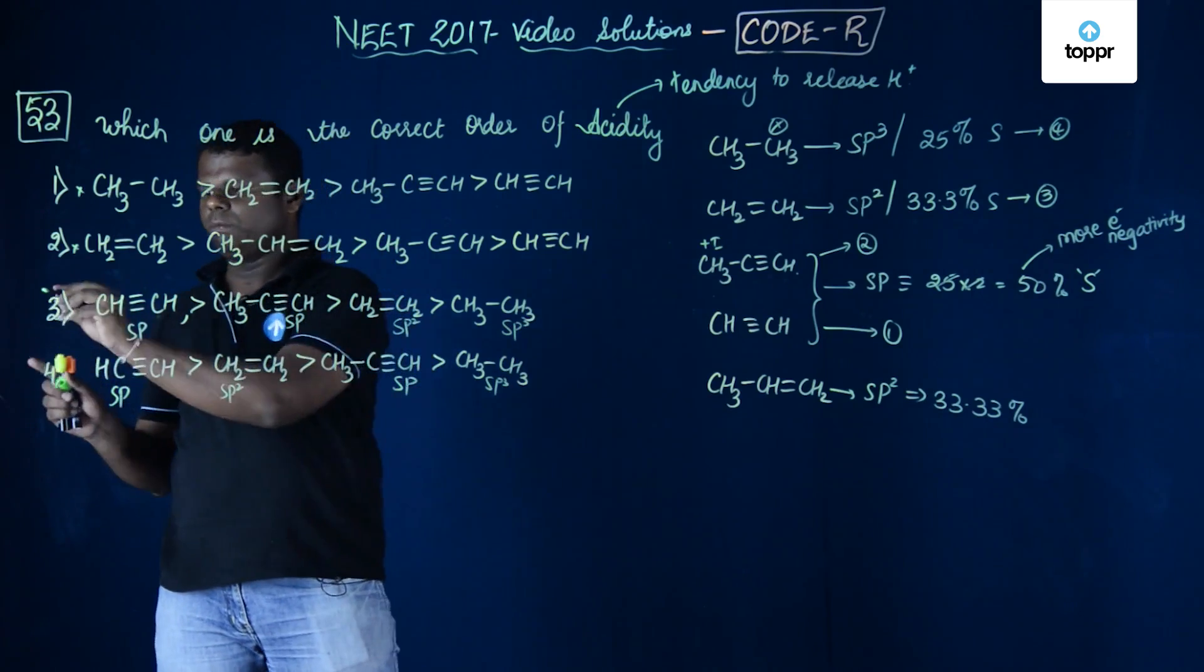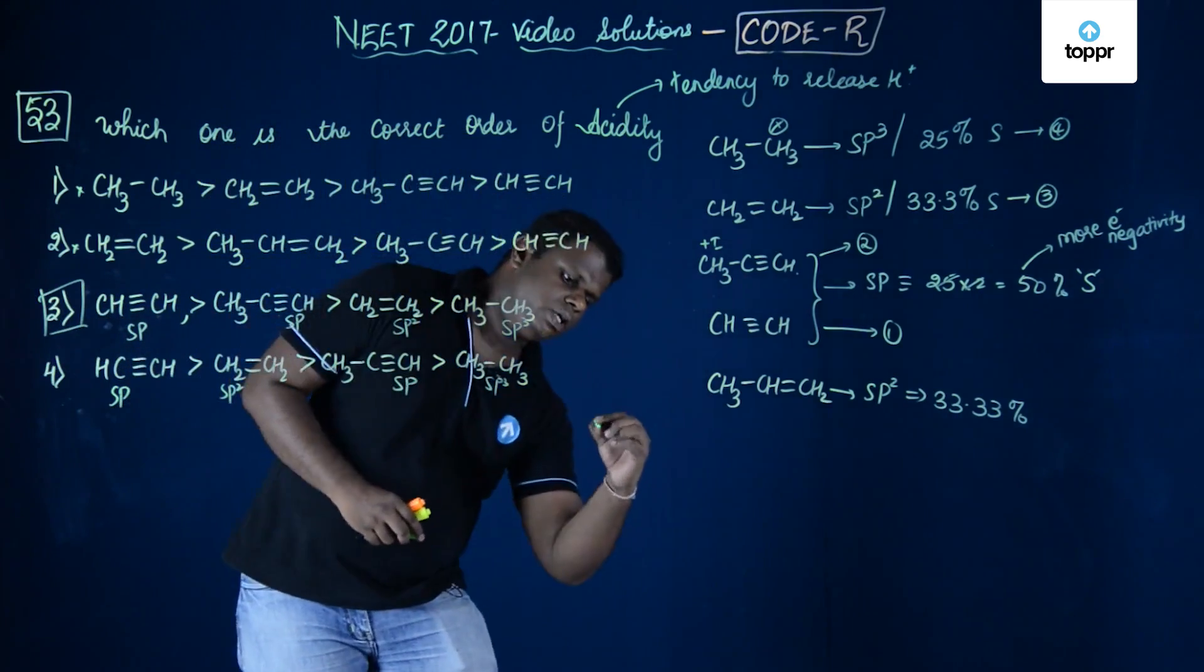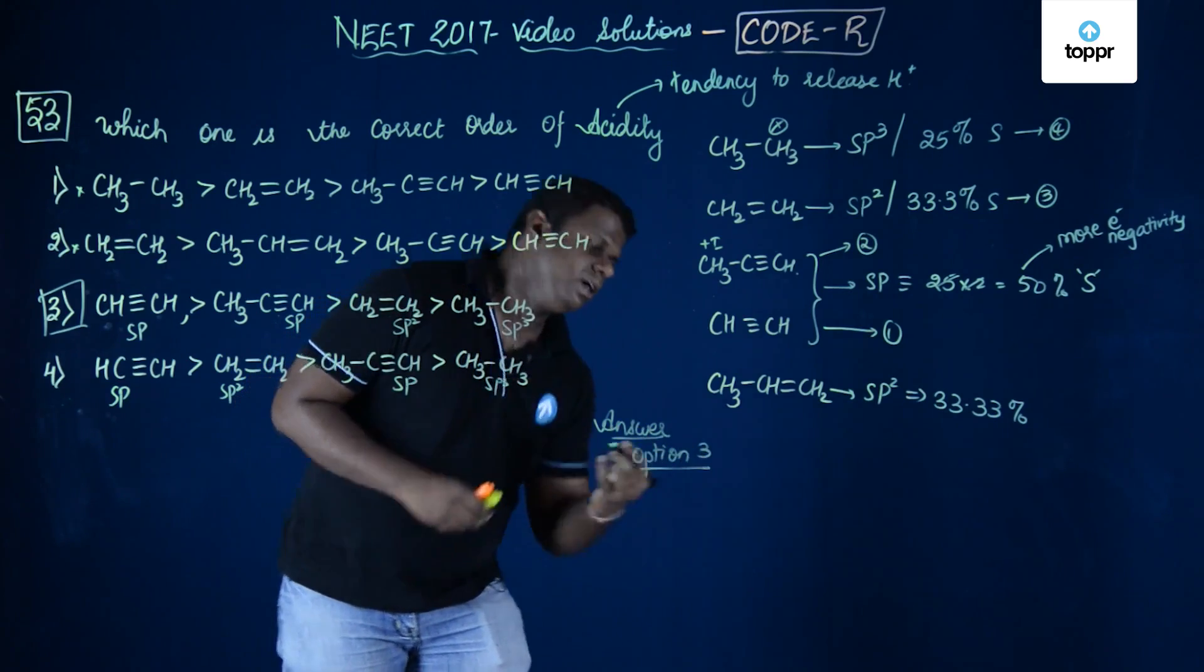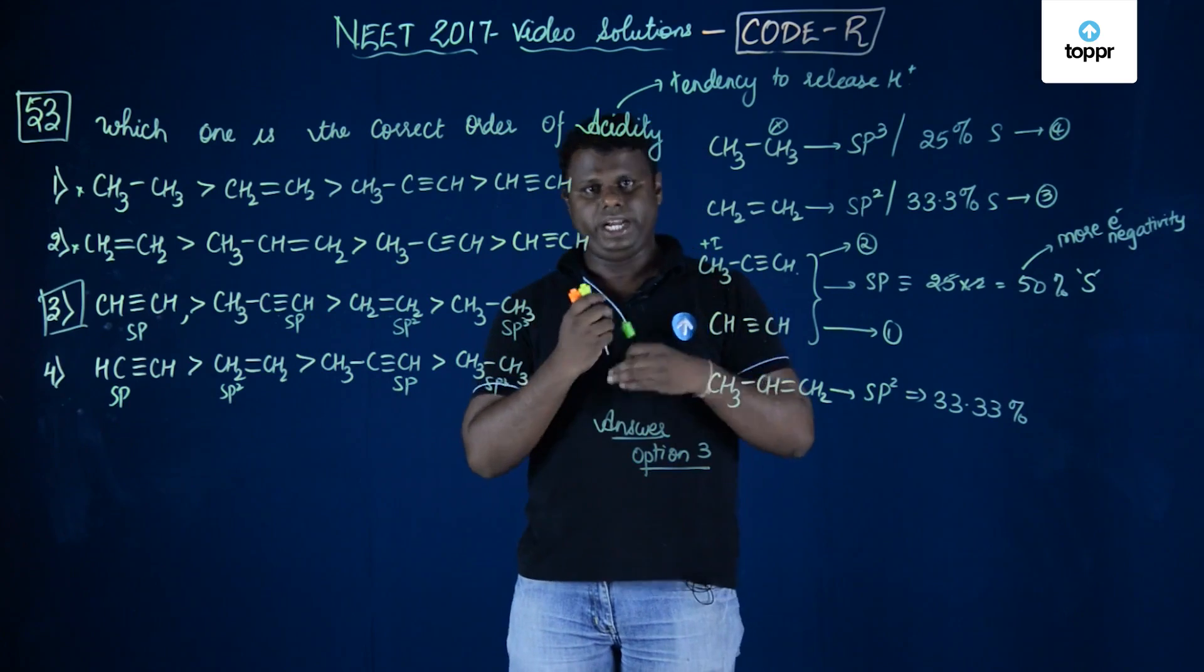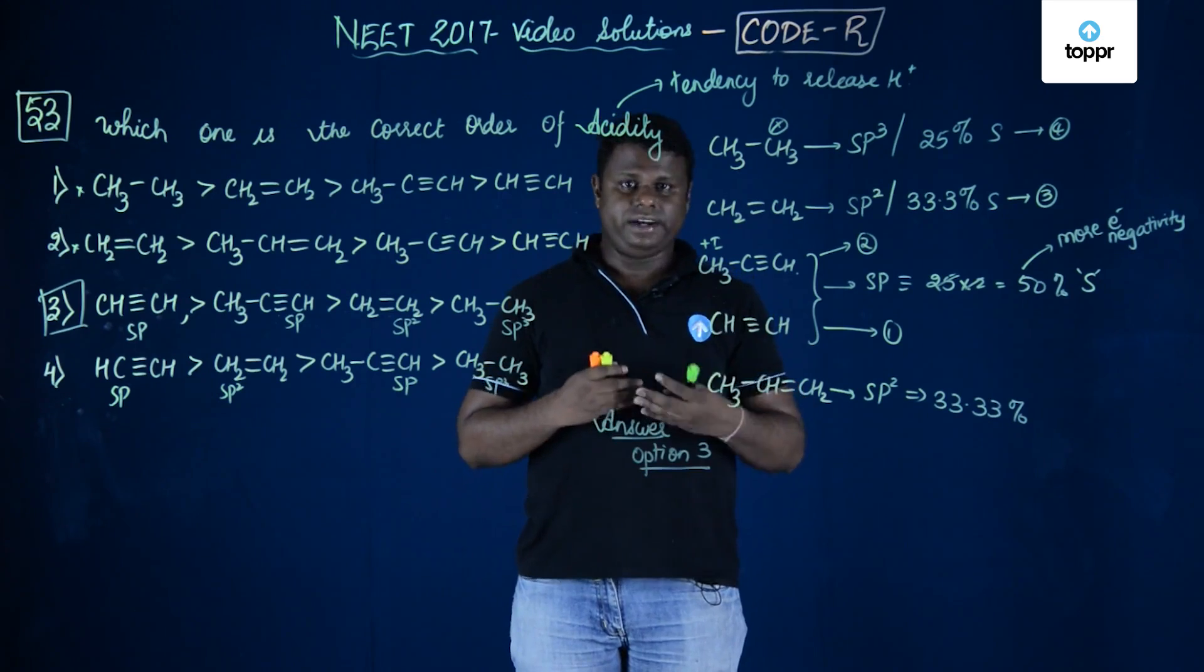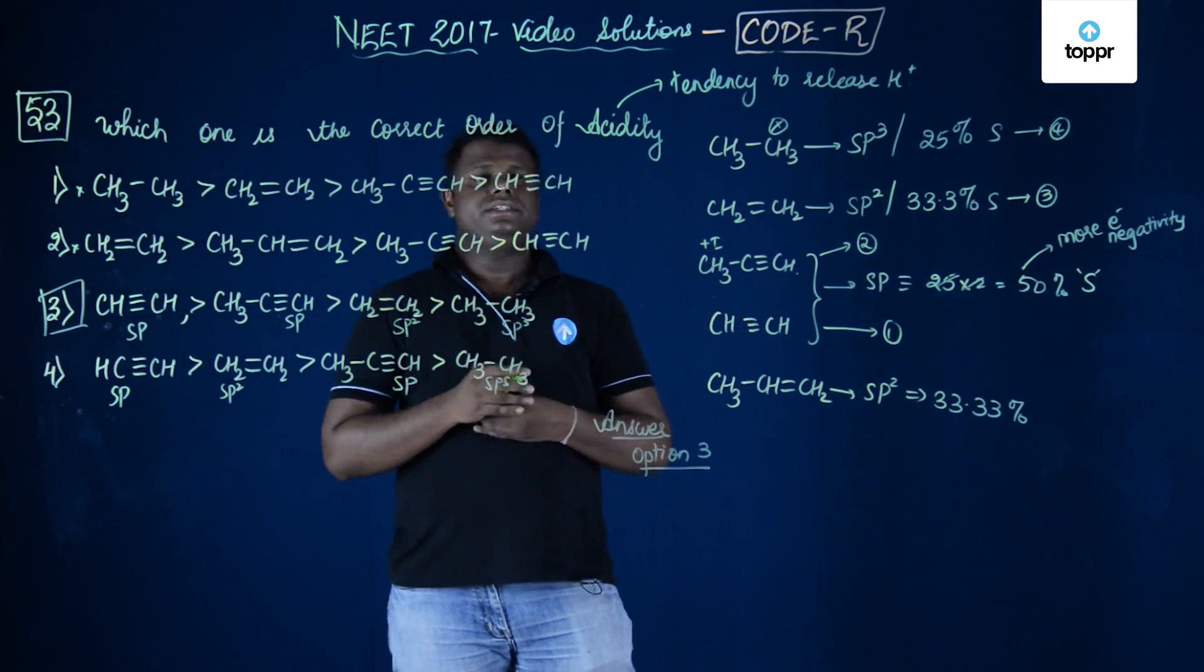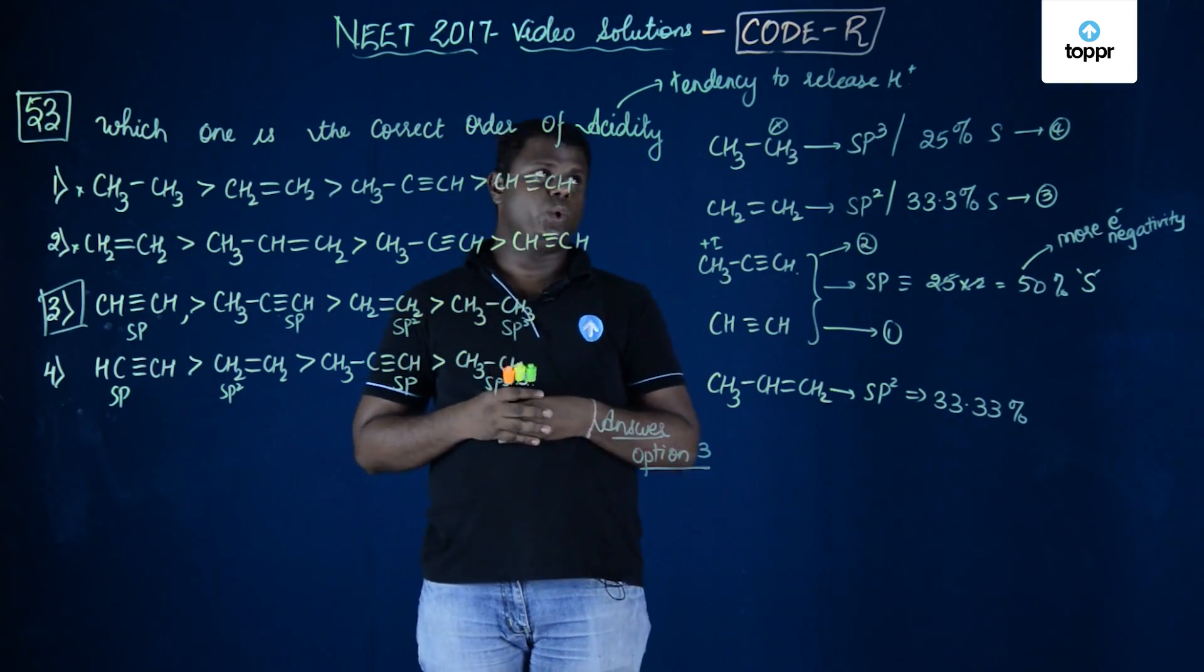The correct order of stability is option, not stability but acidity is option 3. The answer to this question is basically option 3 and the most important aspect is percentage S character is more, electronegativity is more, tendency to attract electron would be more. Higher the percentage S character, higher would be the acidity of the connected hydrogen. The correct answer is option number 3 and this was about question number 53 of NEET 2017 code R.